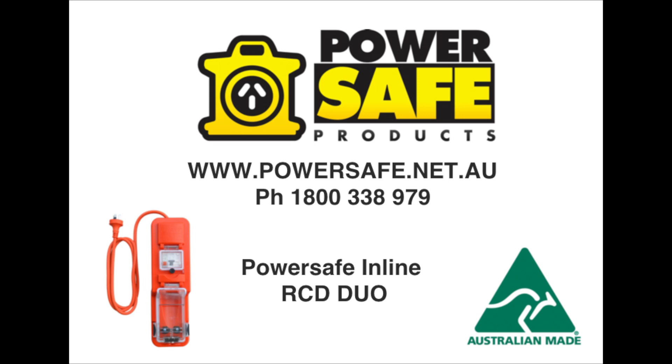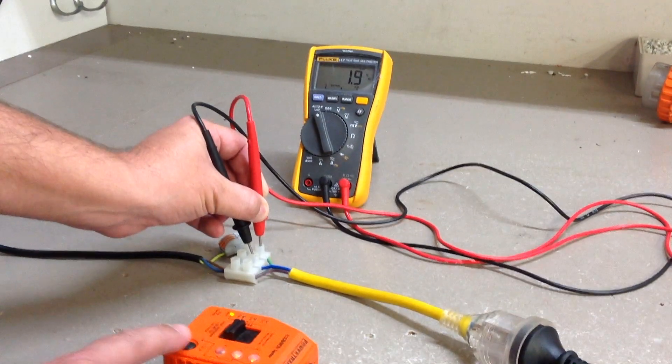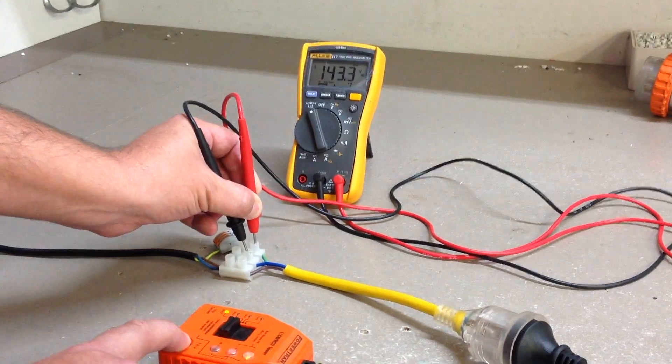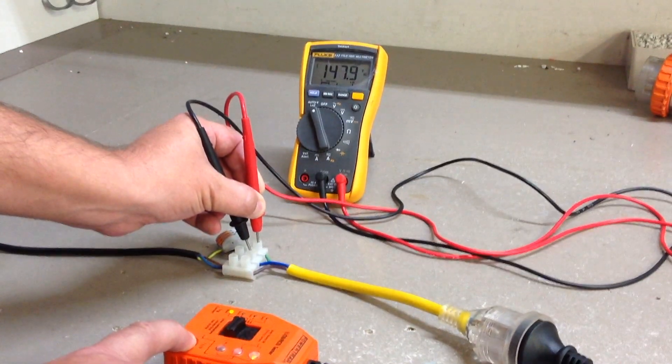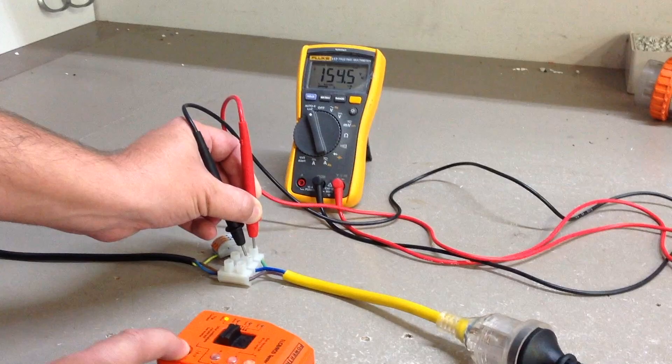This is a short video to demonstrate the DUO ESD working on a generator. First, we are going to show that we are using a RCD tester to create a short to earth that would be similar to what would occur with a faulty appliance.